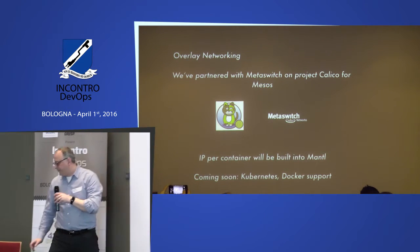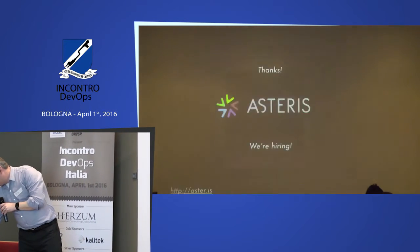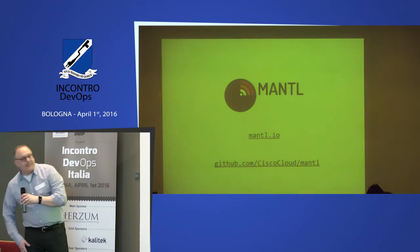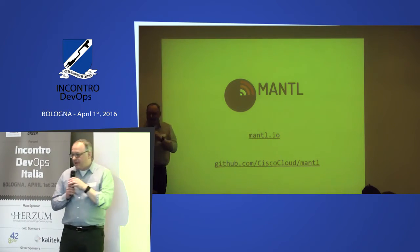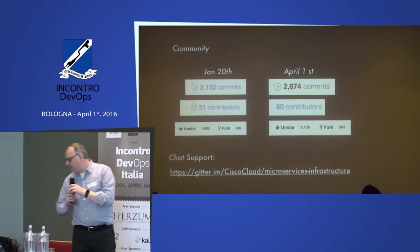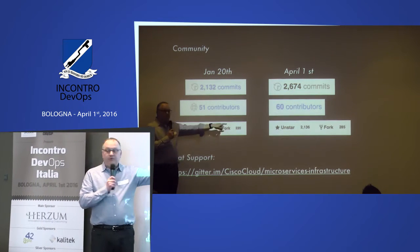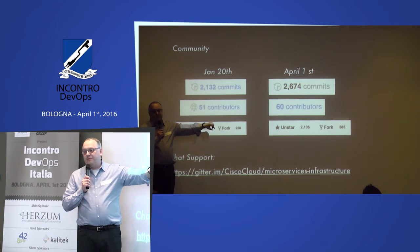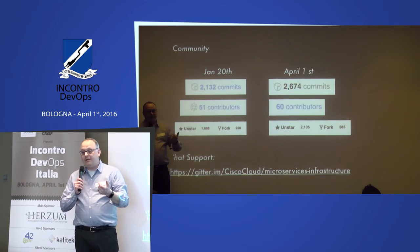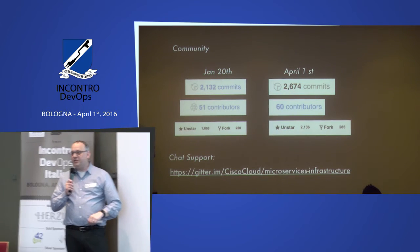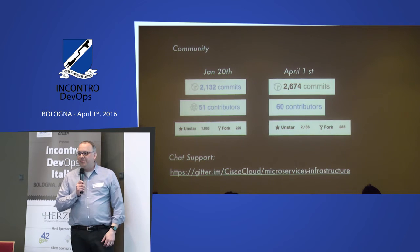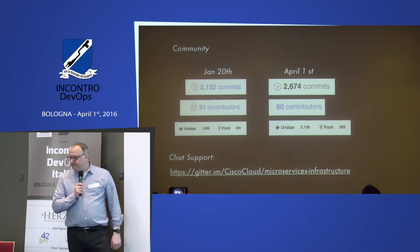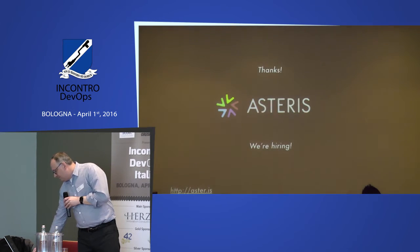That's a summary of the Mantle project. We're at mantle.io and github.com/CiscoCloud. We're passionate about open source — over 2,000 stars on GitHub, new committers joining all the time. We'd love for you to try it out and contribute. We have a Gitter chat for real-time support right from the project page. It's exciting to work on an open-source project and build a community around it. Thank you.